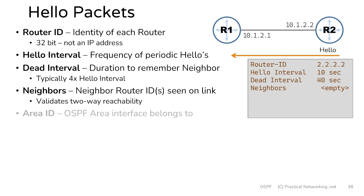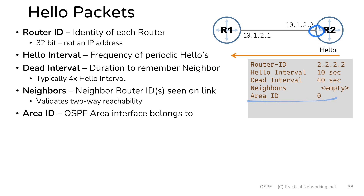Next we come to the area ID. This is also a value that is included in hello packets. You can see here that router 2 thinks this interface is in area 0, from which we can determine that router 2 must be a backbone router.